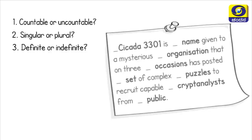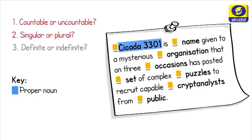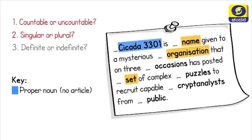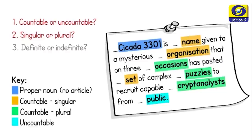Let's examine a sentence from an article about the organisation Cicada 3301. Consider what articles, if any, you would use in each of the blanks. Cicada 3301 is a proper name, like John, Brisbane, or Griffith University, and therefore it takes no article. The nouns name, organisation, and set are all countable and singular. The nouns puzzles, occasions, and cryptanalysts are countable and plural. And the final noun, public, is uncountable.